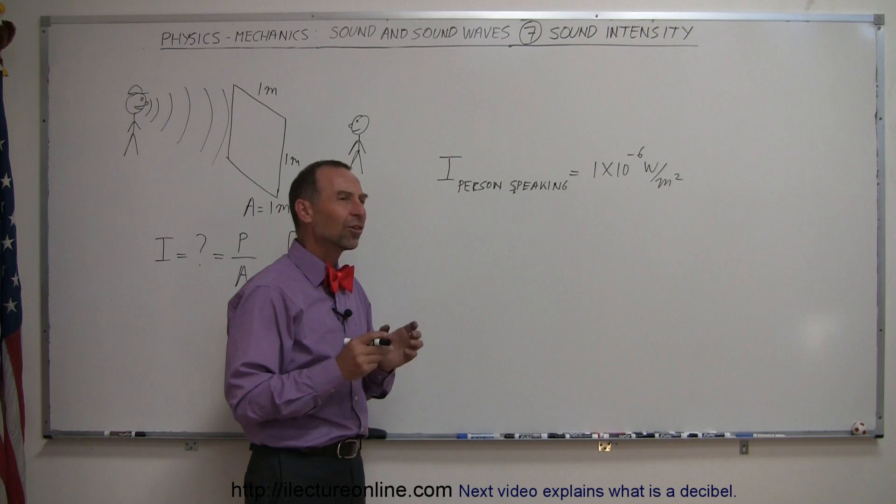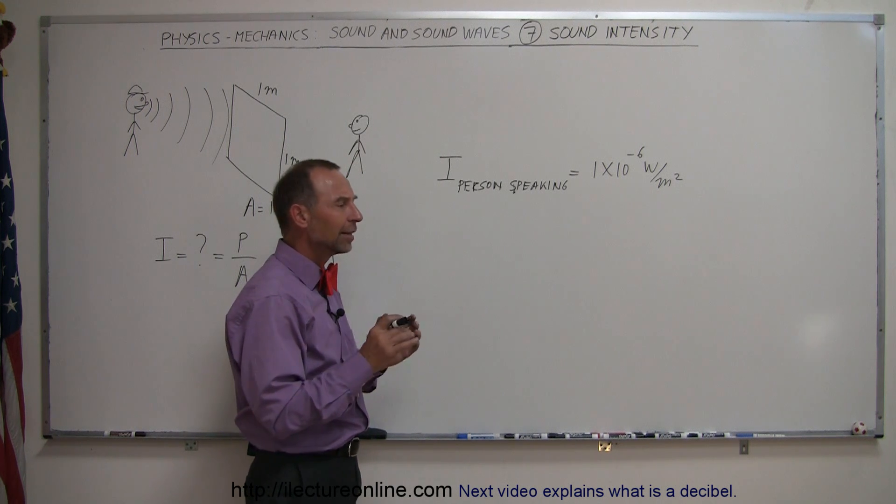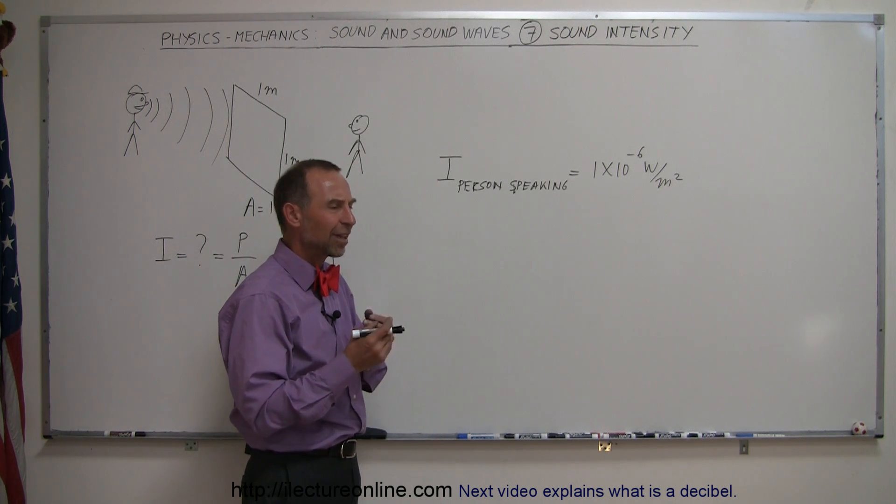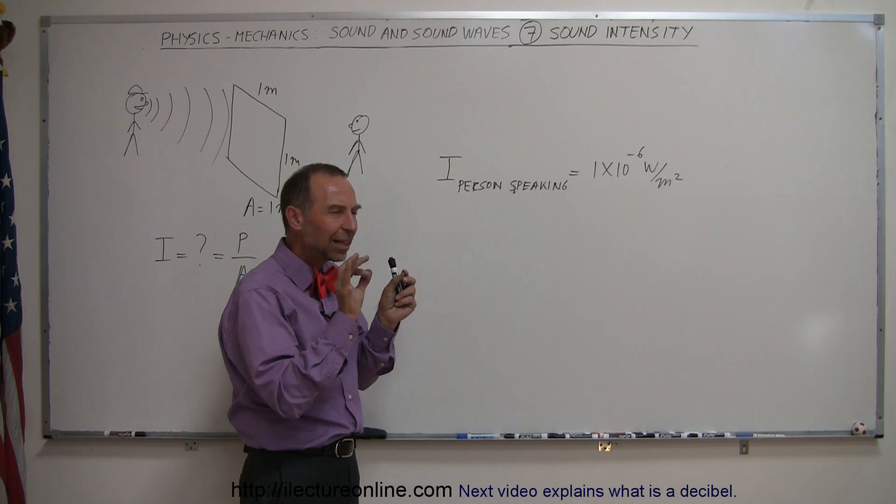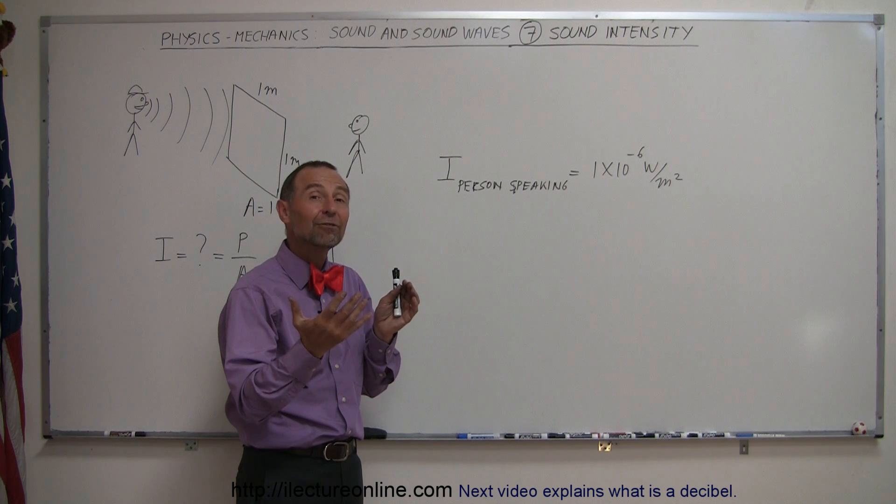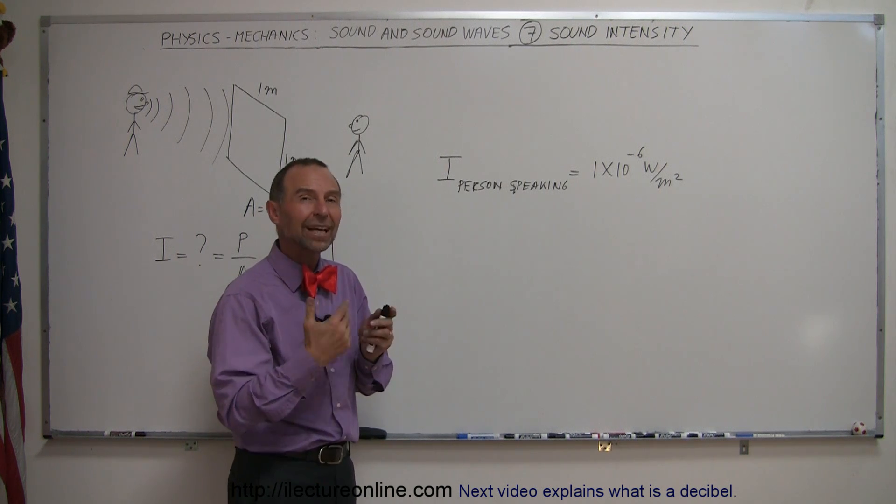Let's say, what is the faintest sound that a human ear can hear? For example, if you're in a place where it's absolutely quiet, it's virtually windstill, and you hear the slightest sound, what kind of power is coming from that sound? What kind of intensity?